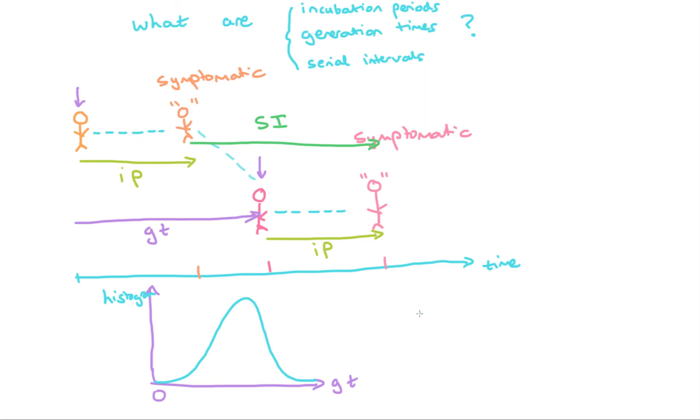To give you some idea for a particular disease, the generation time and the serial interval typically have similar mean values. For COVID-19 it's around 4.5 to 6.5 days. Although clearly, these quantities aren't necessarily fixed in stone because they can respond to, for example, interventions that are brought in against the disease, which may shorten or lengthen the generation time.